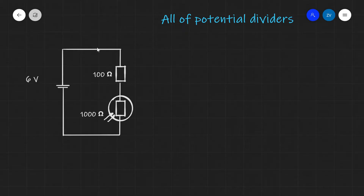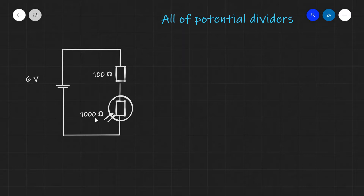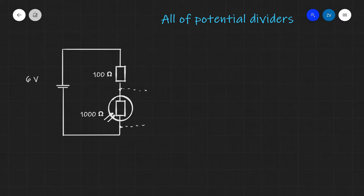For instance, in this circuit I have a fixed resistor of resistance 100 ohms and I also have an LDR, a light dependent resistor, which at the moment at the current light intensity, let's say it has 1000 ohms. Now depending where I choose to put the output of the circuit I'm going to get different voltages. Let me illustrate this. So what I'm going to do is let's say that we're going to have a look at the output across the LDR.